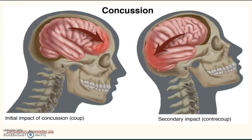Now we're going to take a look at the basic biomechanics behind sustaining a traumatic brain injury. An impact injury is a type of brain injury that results from a direct blow to the head, whereas an impulse injury is a brain injury that results from an accelerated or decelerated force that sets the brain in motion without directly making